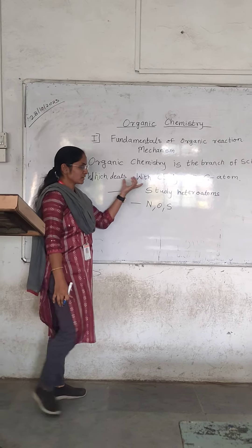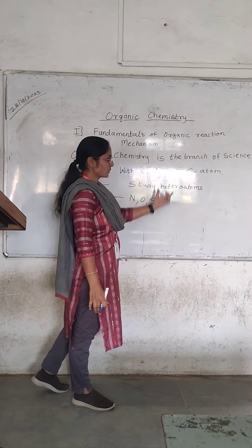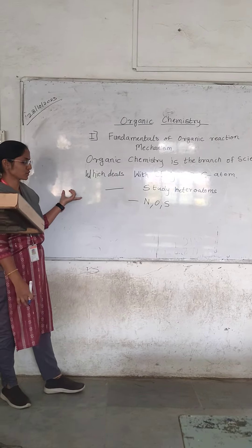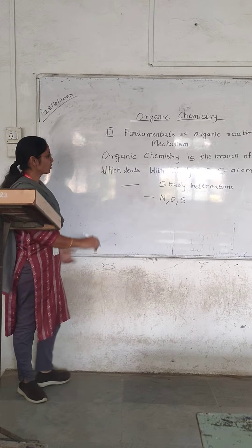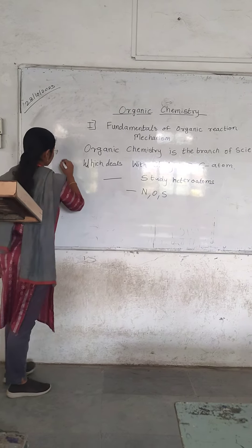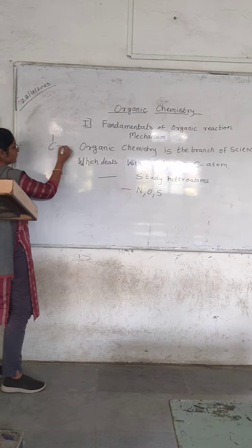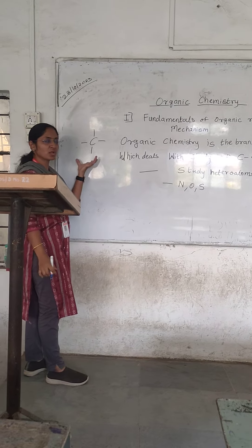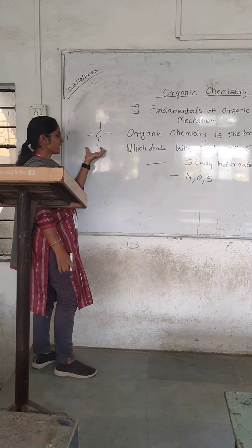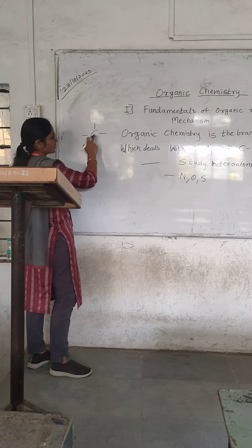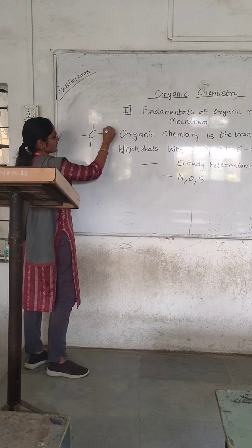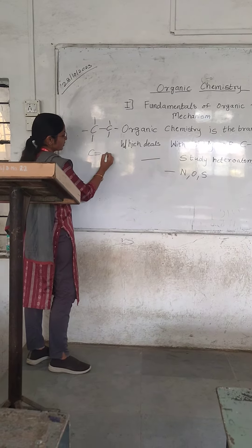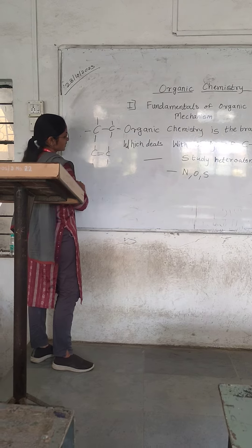We are studying a carbon atom. Carbon atom has a covalent electron, so it forms a covalent bond. This carbon atom can form a carbon-carbon single bond with each other, and it can also form a double bond with each other.